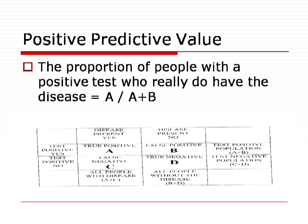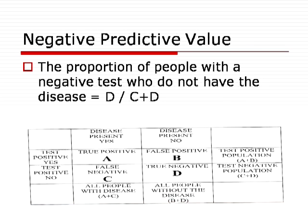And the negative predictive value of a test? The negative predictive value is the proportion of people with a negative test who do not have the disease. That's equal to the true negative divided by false negative plus true negative, which is equal to D divided by C plus D.